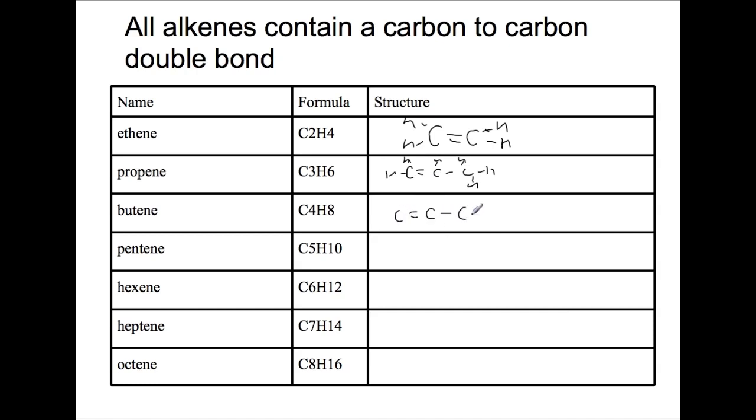Butene has four carbons and eight hydrogens. So you can see from the pattern that in the alkenes the number of hydrogens is double that of the number of carbons.